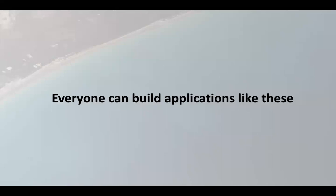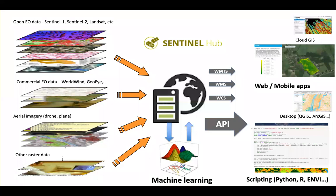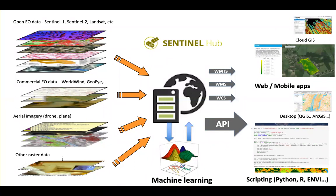You can use open source tools or simply use Sentinel Hub service as a backend, and then you can do something like EO Browser yourself. So what is Sentinel Hub? Sentinel Hub is a set of APIs that hide the complexity of the storage, processing, archiving, and distribution of various kinds of Earth observation data. They make them available through OGC compliant APIs as well as proprietary RESTful APIs, which can then be easily integrated in web or mobile applications, or even used in machine learning workflows. A significant volume of the use of our service comes from machine learning users.